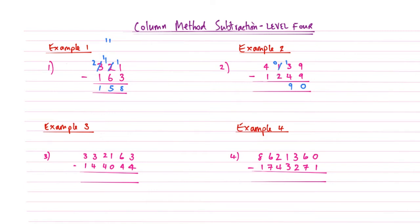Hundreds column now. Again, 0 is smaller than the 2 so we need to borrow from the 4. That reduces to a 3. The 1 that we've taken away from it, we write next to the 0 there. So that becomes a 10. 10 subtract 2 becomes 8. And then 3 subtract 1 becomes 2. And so the answer for number 2 is 2,890. And I'm just going to tick these.